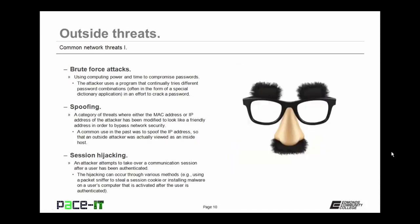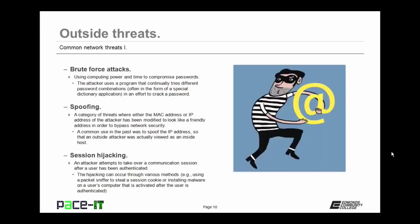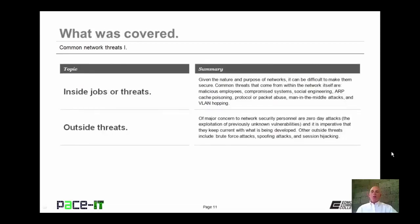Then there's spoofing. This is a category of threats where either the MAC address or the IP address of the attacker has been modified to look like a friendly address in order to bypass network security. A common use in the past was for an attacker to spoof their IP address so that the outside attacker was actually viewed as an inside host. A common defense against this type of spoofing is an ACL rule that doesn't allow an inside IP address to come from outside of your network. Then there's session hijacking, where an attacker attempts to take over a communication session after a user has been authenticated, through methods such as using a packet sniffer to steal a session cookie or installing malware on a user's computer.